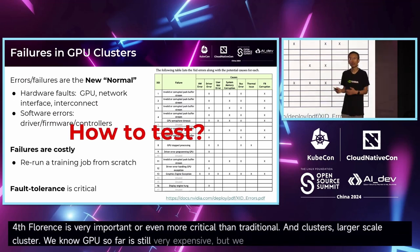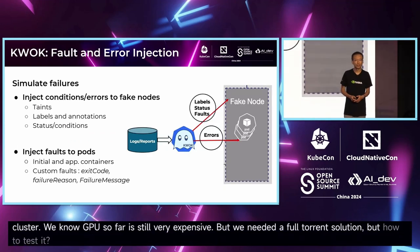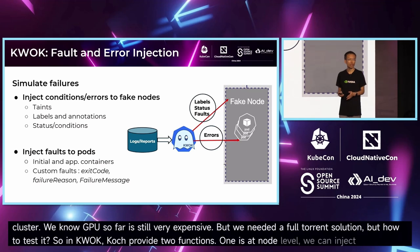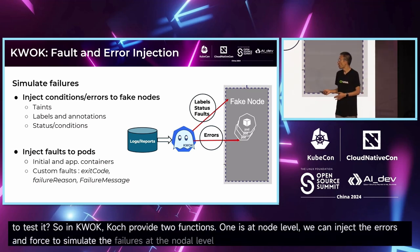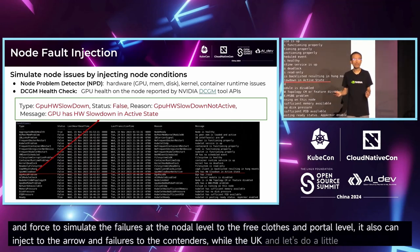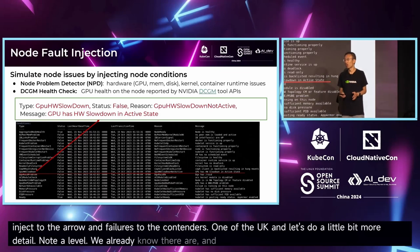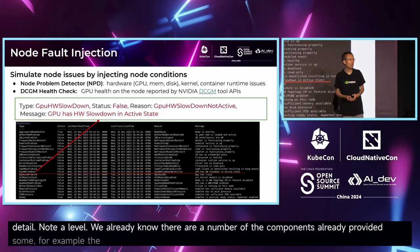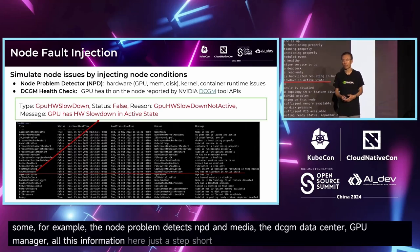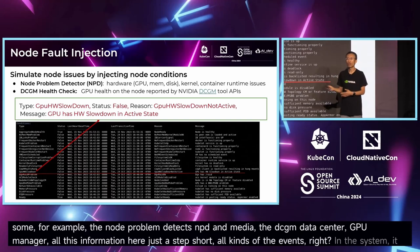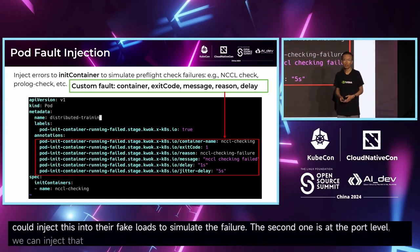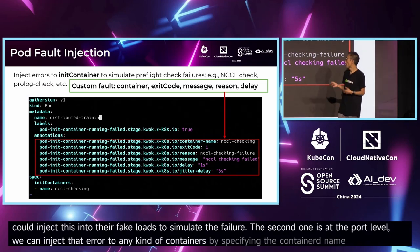Fault tolerance is very important — even more critical than in traditional clusters — especially since GPUs are still very expensive. We need a fault-tolerance solution, but how do we test it? Quark provides two functions: at the node level, we can inject errors to simulate failures on fake nodes; at the pod level, we can inject errors and failures into containers. Let's look in a bit more detail. At the node level there are a number of components — for example, the node feature discovery, NVIDIA DCGM (Data Center GPU Manager) — all generating various events in the system that we can inject into fake nodes.